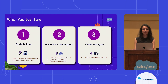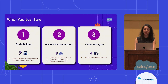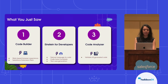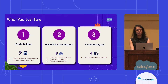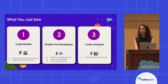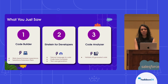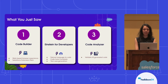A ton of different tools that we just saw in action. With Code Builder, you get access to that web-based browser experience and the Salesforce extension pack already pre-bundled for you. With Einstein for Developers, we got a chance to see natural language to code, code auto-completion, and test case generation. And last but not least, we were able to validate all of that AI-generated code with the help of Code Analyzer as well.